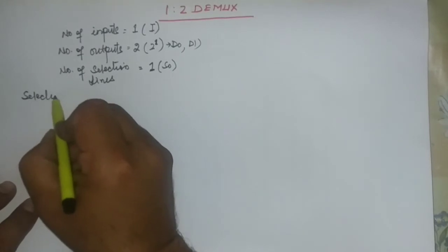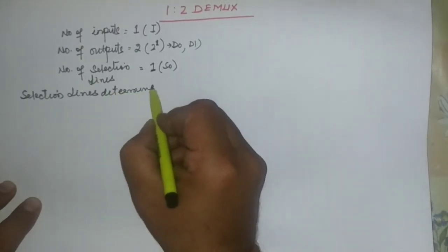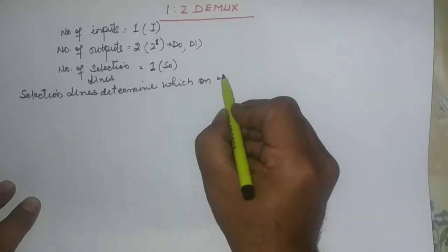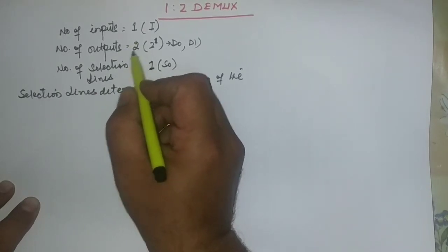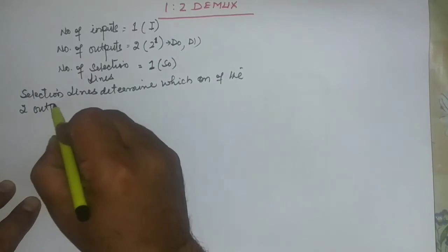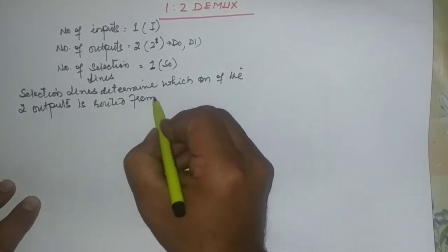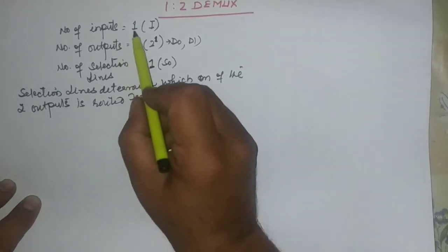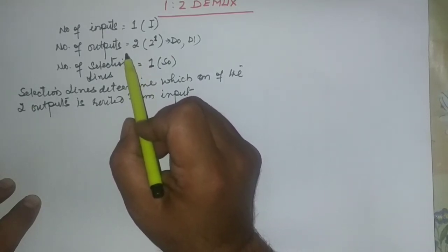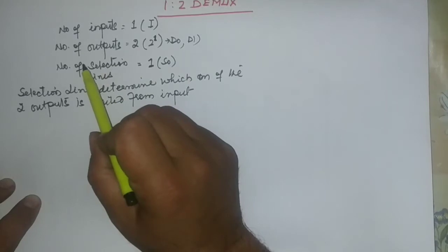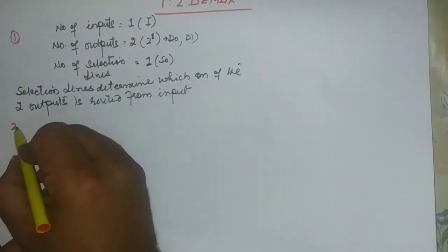The number of selection lines is 1, because whatever is the power of 2, that many selection lines are needed. We denote it as S0. The selection lines determine which one of the two outputs the input is routed through. We have only one input, so the selection line decides which particular output will be selected for the given input.